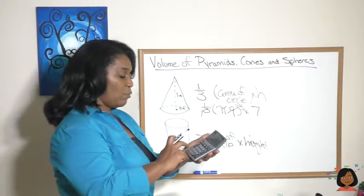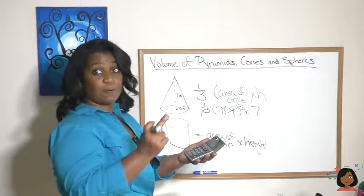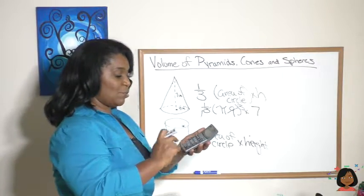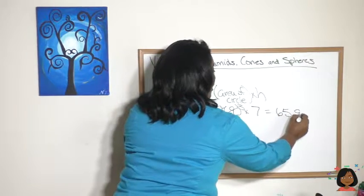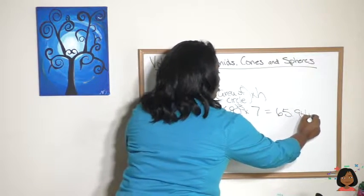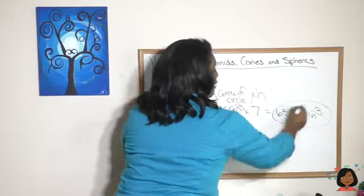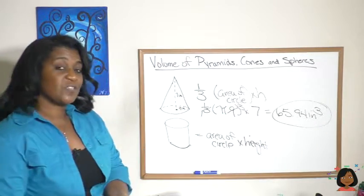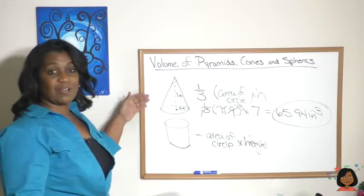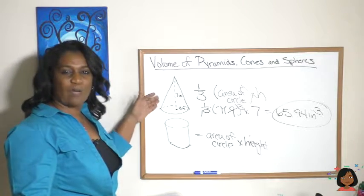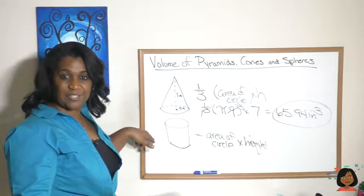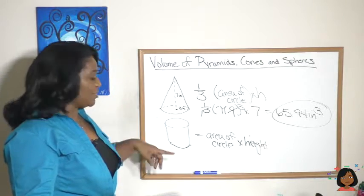All right, I've got my calculator here. We're going to use 3.14 for π and multiply it times 21. That gives us 65.94 inches, and remember the label for volume is always cubed. So if you can remember that the cylinder and the cone have a relationship, the volume of the cone is one-third that of the cylinder that has the same dimensions.